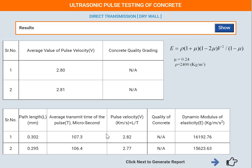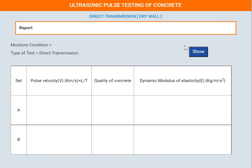Click show and the computed values are displayed. As per IS 456, a quality table is provided: if the velocity value is below 3 km/s, the quality of concrete is doubtful. Since our value is 2.80 km/s as per IS 516, the concrete quality is doubtful, meaning it is very poor. From the formula we can also find the dynamic modulus of elasticity.